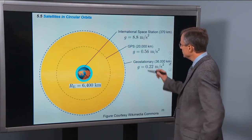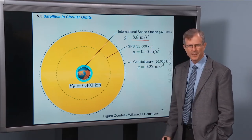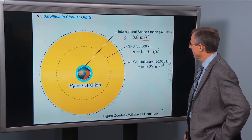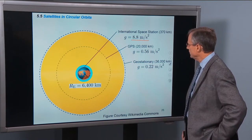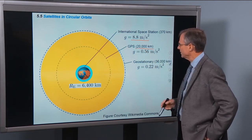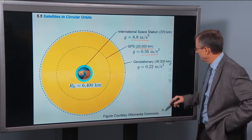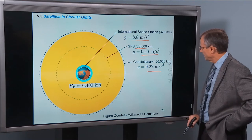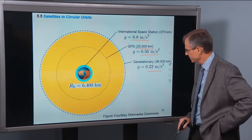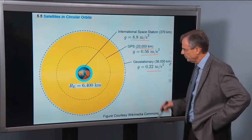So here's some calculations drawn roughly to scale. The space station has a g of about, instead of 9.8, about 8.8. I think I estimated it before it would be 8.5, but it's 8.8 where the space station is. The GPS systems are at about 20,000 kilometers above the surface of the Earth. And they have a g of 0.56. And then geostationary are about 36,000 kilometers above the surface, from the center of the Earth. And their g value is 0.22.